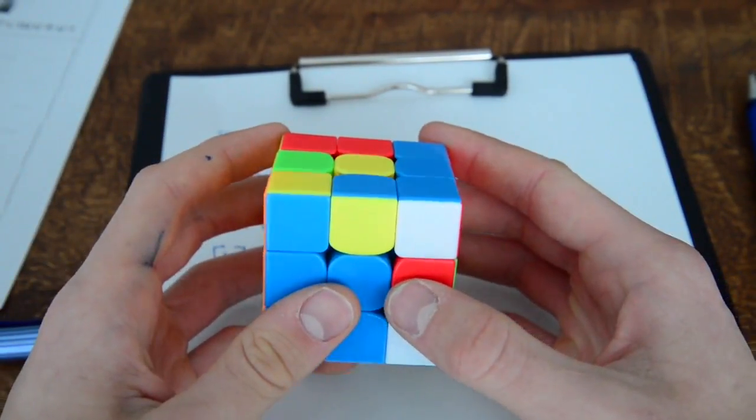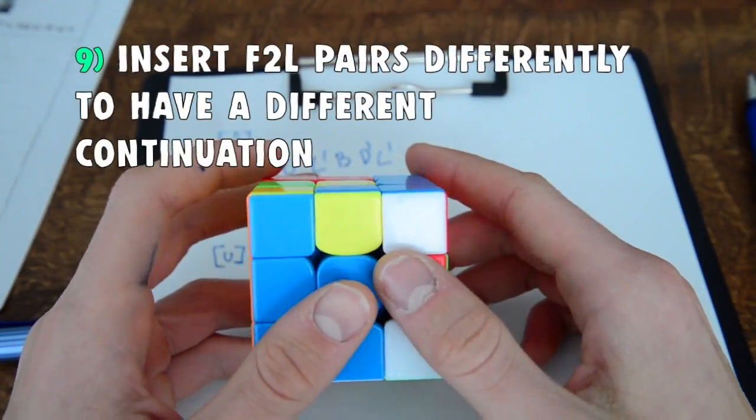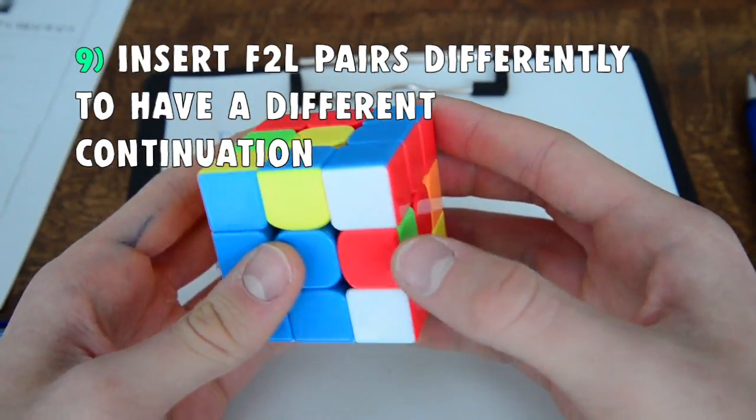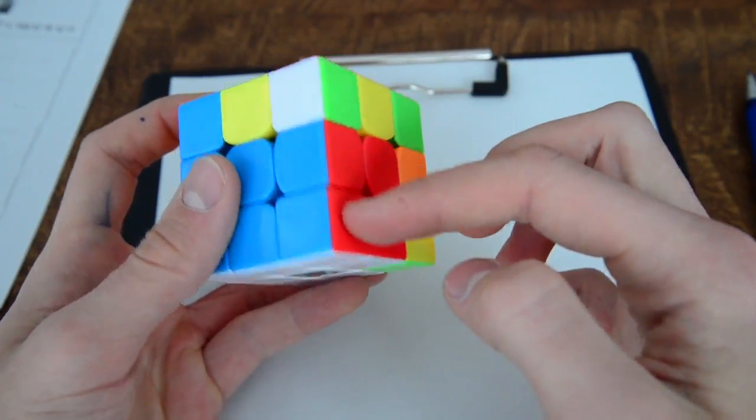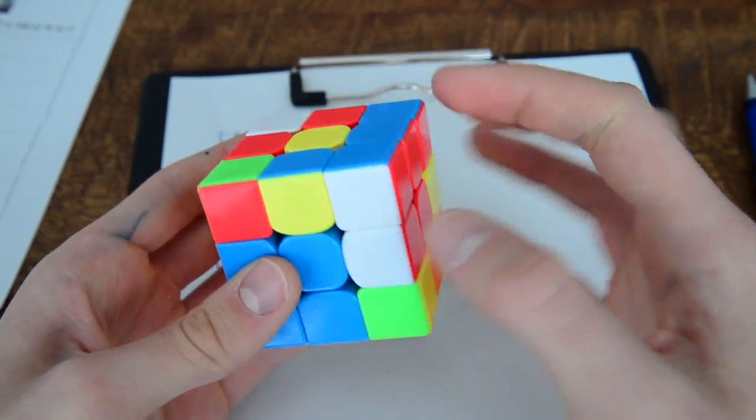So tip number six is when you have found a decent chain reaction in your F2L, try to play with your insertions. As you can see this is one insertion, you take and insert it like this. Then this is another one, we insert that one like this.